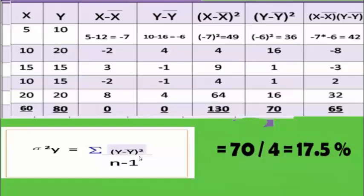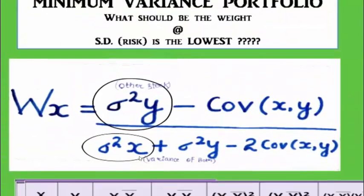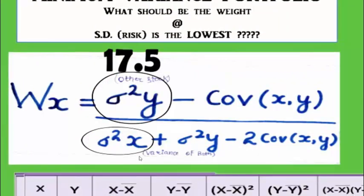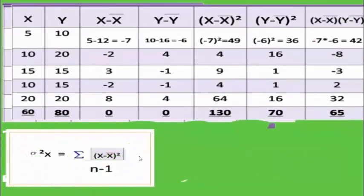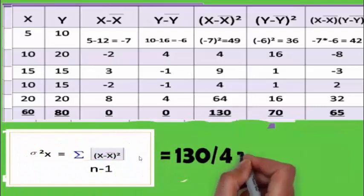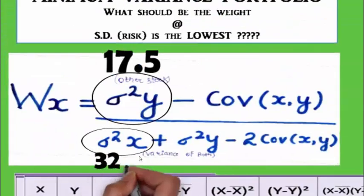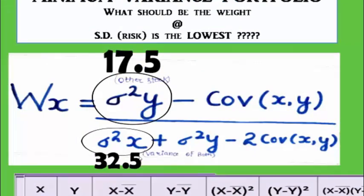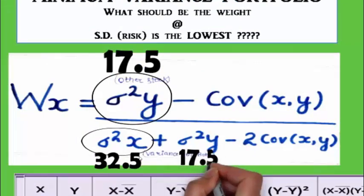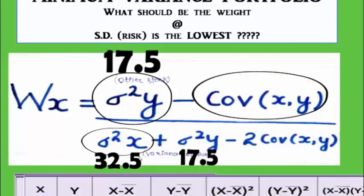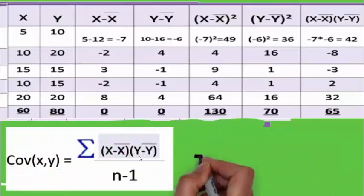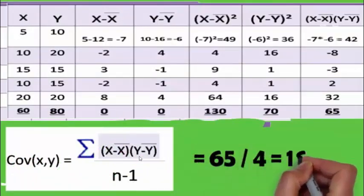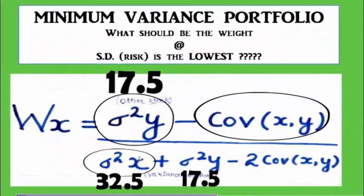The variance of stock X uses the same formula: 130 divided by 4, which gives 32.5. Next, the covariance of X and Y — the joint deviation of X around X-bar and Y around Y-bar — is 65 divided by 4, giving 16.25. Now we have all the values needed for the weight formula.